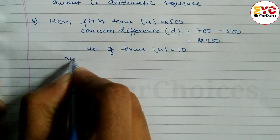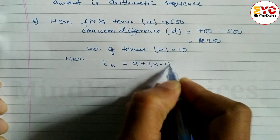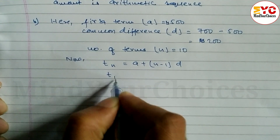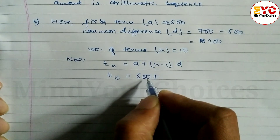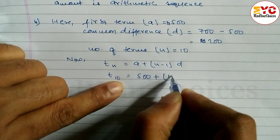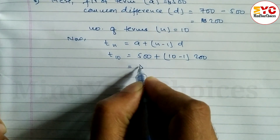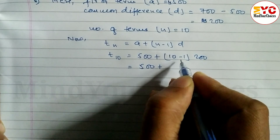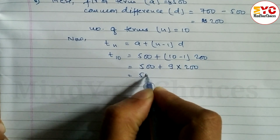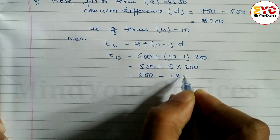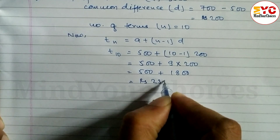T10 formula is A plus (N minus 1) D. So T10 equals 500 plus (10 minus 1) into 200, which is 500 plus 9 into 200, equals 500 plus 1800, giving us rupees 2300.